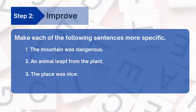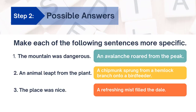Let's get some practice improving the following general sentences — go ahead and pause this while you do that. Here are some possible answers. You'll notice that we changed 'the place was nice' to how it was nice. Asking questions like 'how' or 'what type of' will really help us bring out more specific language. How was it nice? A refreshing mist filled the dale. How was it dangerous? An avalanche roared from the peak. What type of animal leapt? It was a chipmunk. What type of plant did it leap from? It was a hemlock.